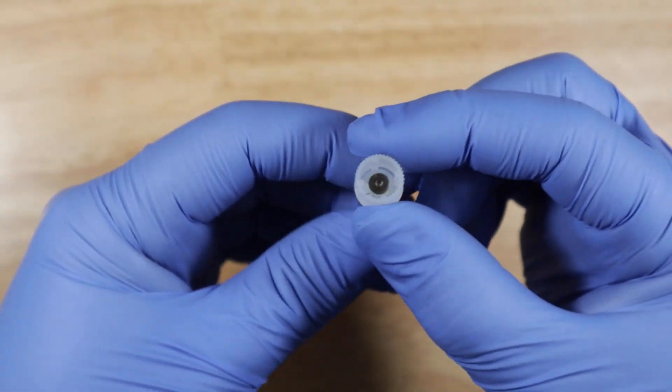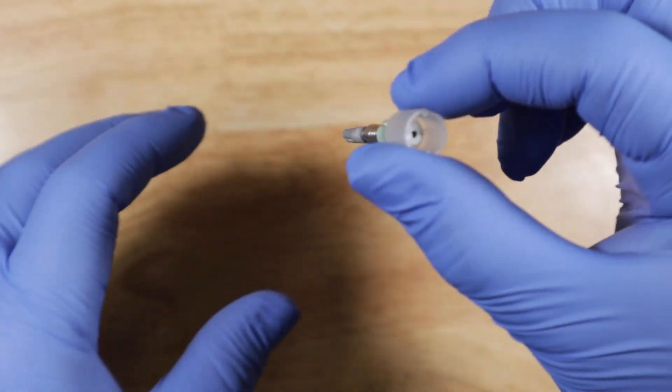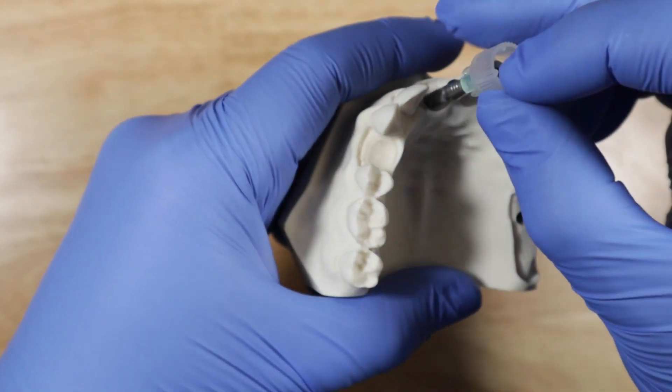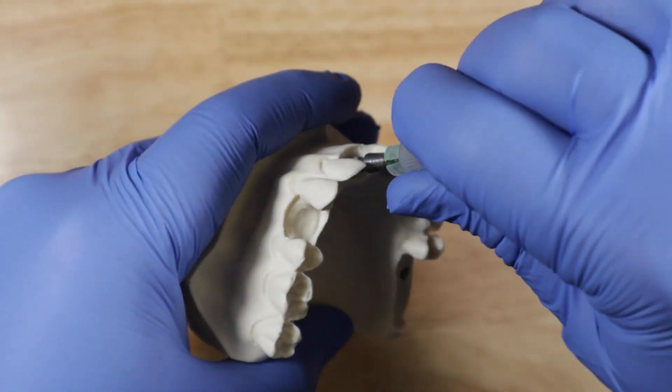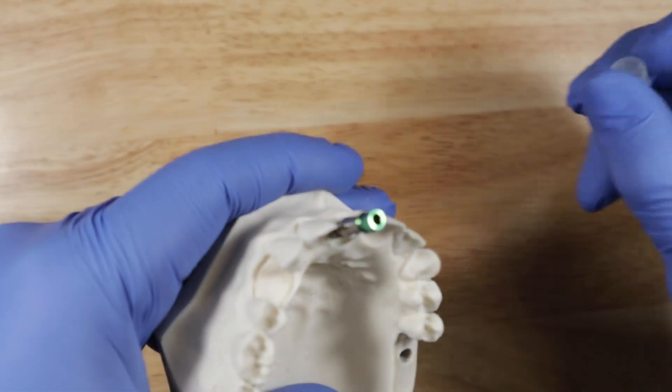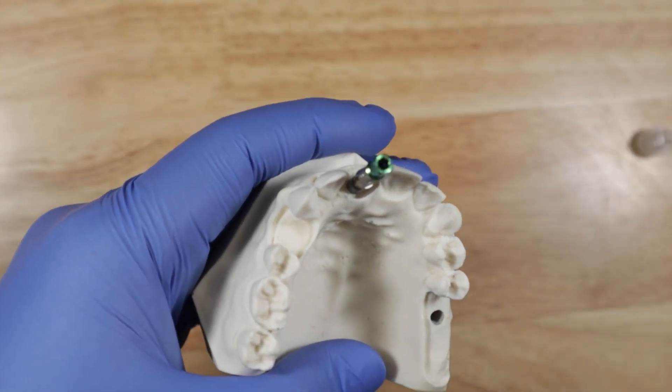So our implants come with this little thumb grip. So out of the little sterile packaging, you pull it out with this thumb grip and after you've already prepped your implant site, you're going to be inserting it with this thumb grip, right? Until basically the torque maxes out and this little thing comes off. It just comes off.